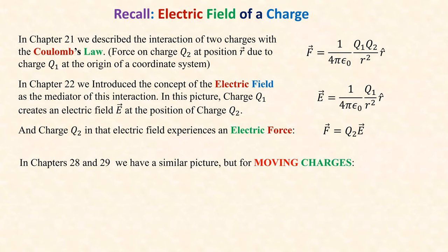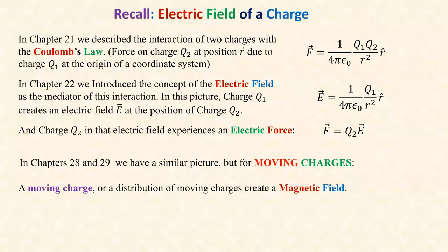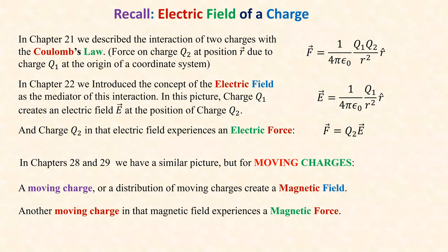In chapters 28 and 29 we have a similar picture but for moving charges. Over there we talked about stationary charges; here we talk about moving charges. A moving charge, or a distribution of moving charges — which is a current — creates a magnetic field. And another moving charge in that magnetic field experiences a magnetic force. It's very similar: a stationary electric charge creates an electric field, and a charge in that field experiences a force. Likewise, a moving charge creates a magnetic field, and a moving charge in that field experiences a magnetic force.